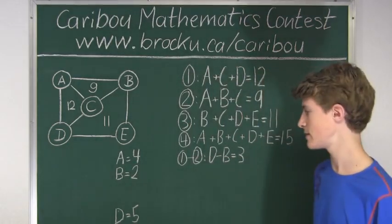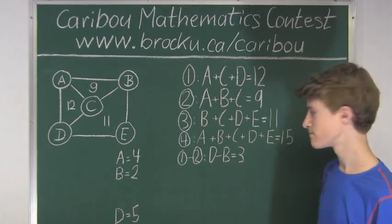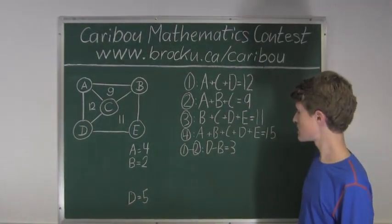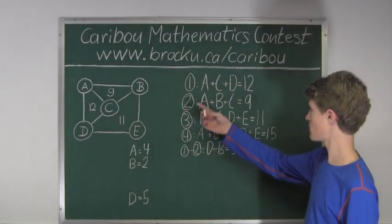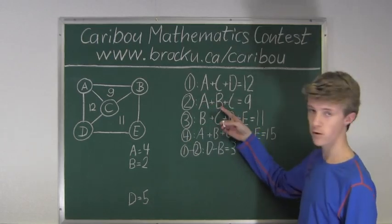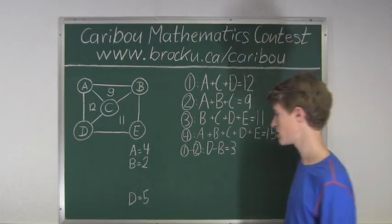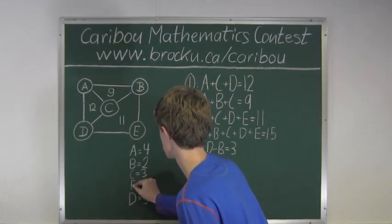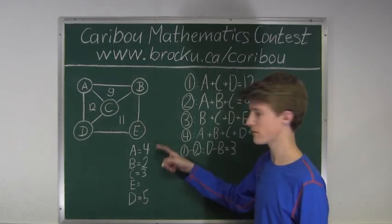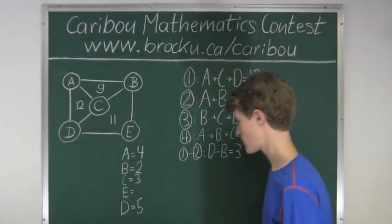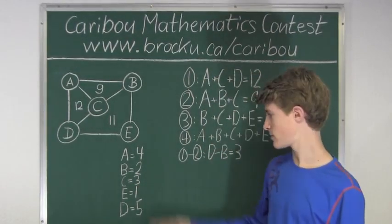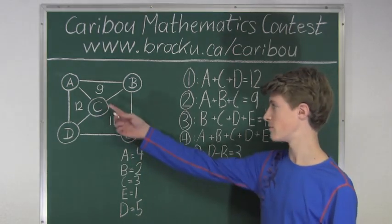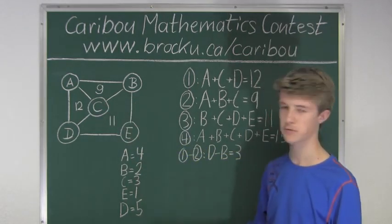Now all we have to do is find C and E. We substitute into equation 2, which has A and B: A plus B plus C equals 9, so 4 plus 2 plus C equals 9, meaning C must be 3. Since we already have 2, 3, 4, and 5, we know E must be 1. So now we have all the values of the vertices. The question asked for the value of the middle circle, which is C, and C equals 3, so the answer is 3.